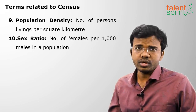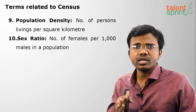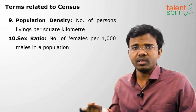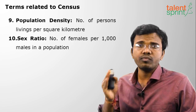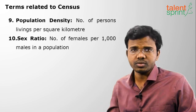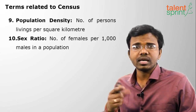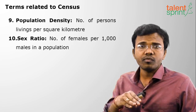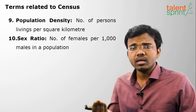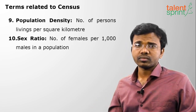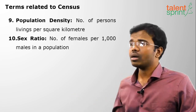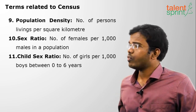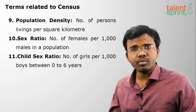The next term is sex ratio. Generally sex ratio means number of males per females, but here we are referring to female sex ratio. Since females are fewer in India, we consider the number of females per thousand males. This is called the adult sex ratio.